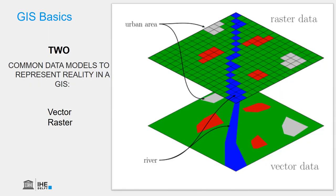In GIS, there are two common data models to represent reality: Vector and Raster. Vector has already been explained in another video. In this video, we are going to talk about raster data.